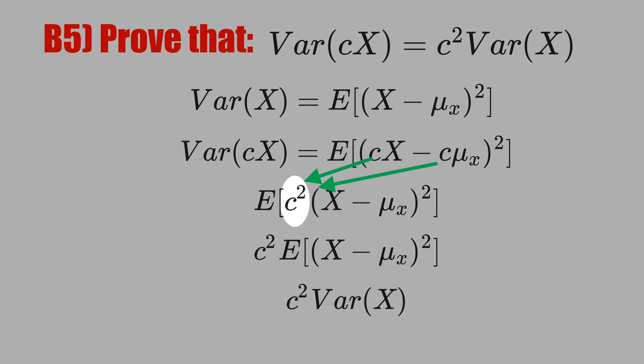And because c squared is a constant, we can put it outside of the expectation. And this term here is just the variance of the random variable X. Therefore, we prove that this equality is true.